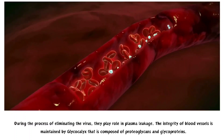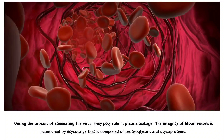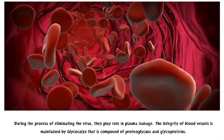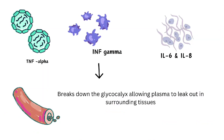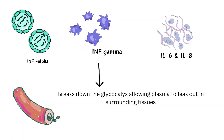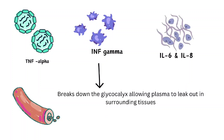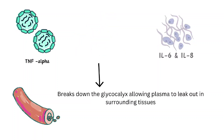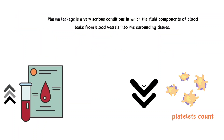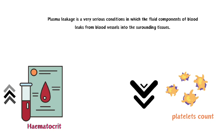The integrity of blood vessels is maintained by the glycocalyx, which is composed of proteoglycans and glycoproteins. It has been said that those released pro-inflammatory molecules break down the glycocalyx. As a result, plasma will leak out into the surrounding tissues. Plasma leakage is a very serious complication that arises in dengue infections, in which the fluid components of blood leak from the blood vessels into the surrounding tissues.